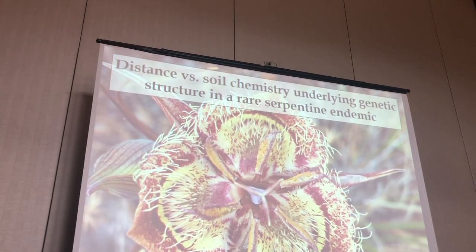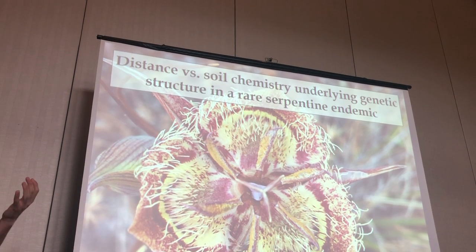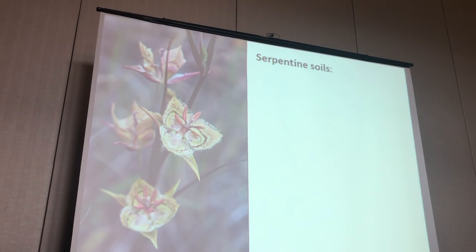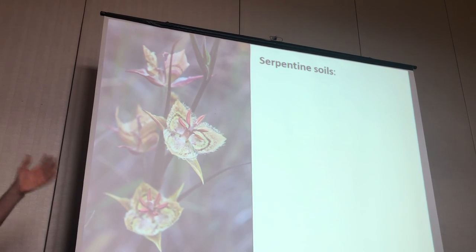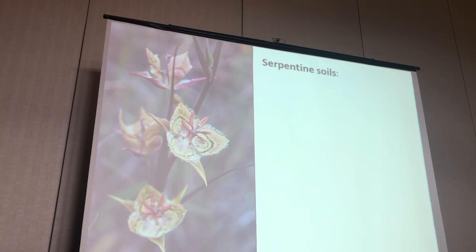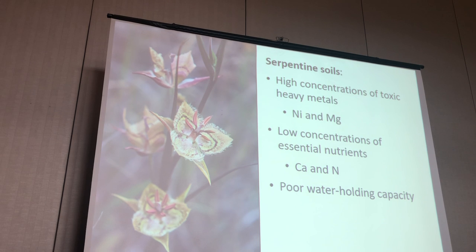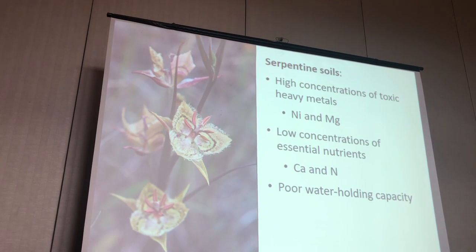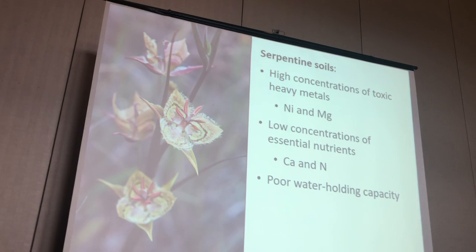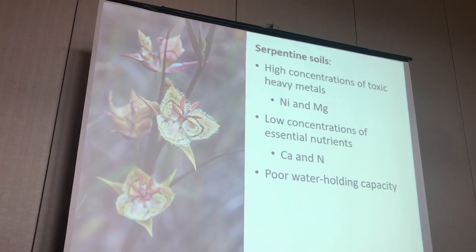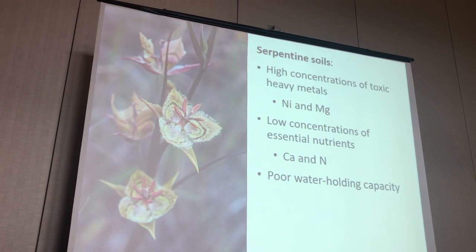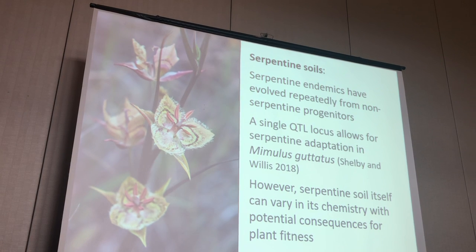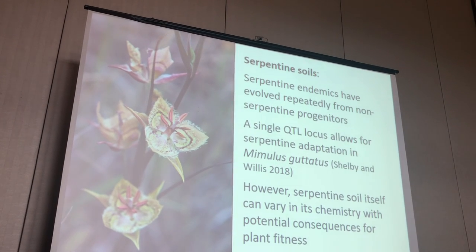We were really interested in examining how soil and isolation by distance might be contributing to genetic structure in a population of Calochortus. This species is found on serpentine soils, which are patchily distributed throughout the Pacific Coast in North America, and they're really stressful environments for plants to grow. They have incredibly high concentrations of toxic heavy metals, most notably nickel and magnesium, very low concentrations of essential nutrients such as calcium and nitrogen, and they also have really poor water-holding capacity. As a result, serpentine endemics have repeatedly evolved from non-serpentine progenitors, and so you have a lot of endemic diversity on these patches.